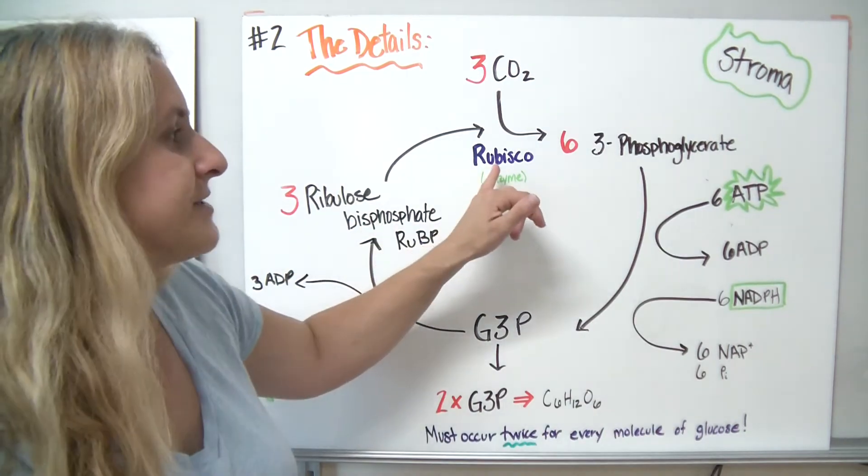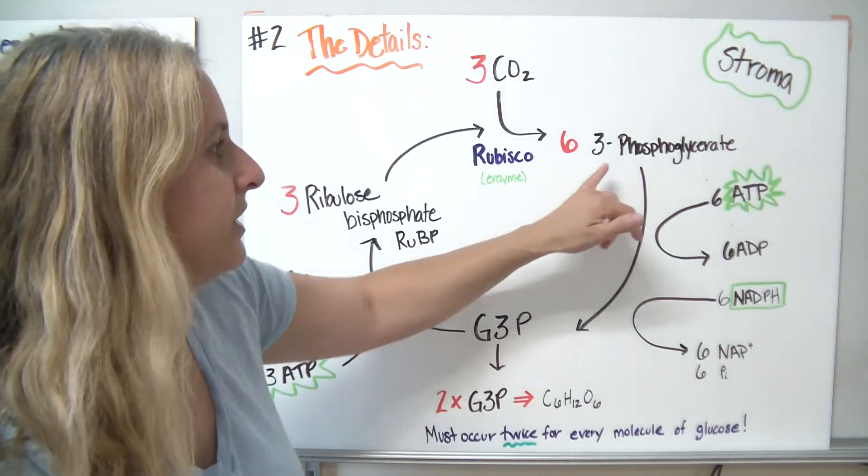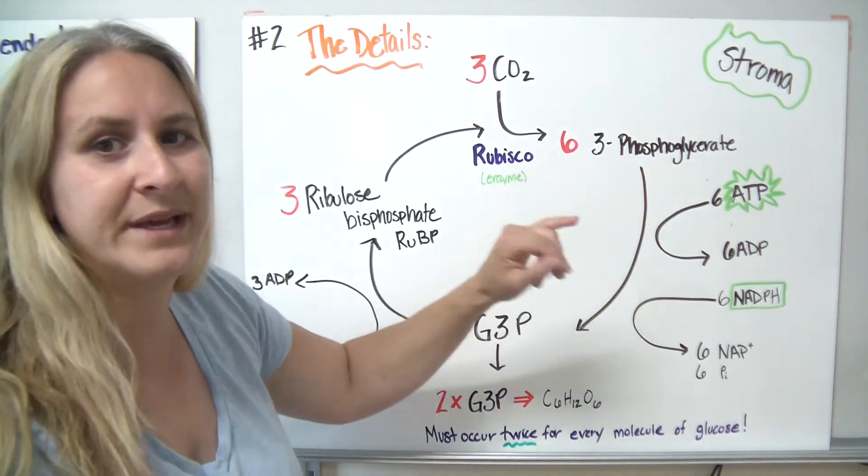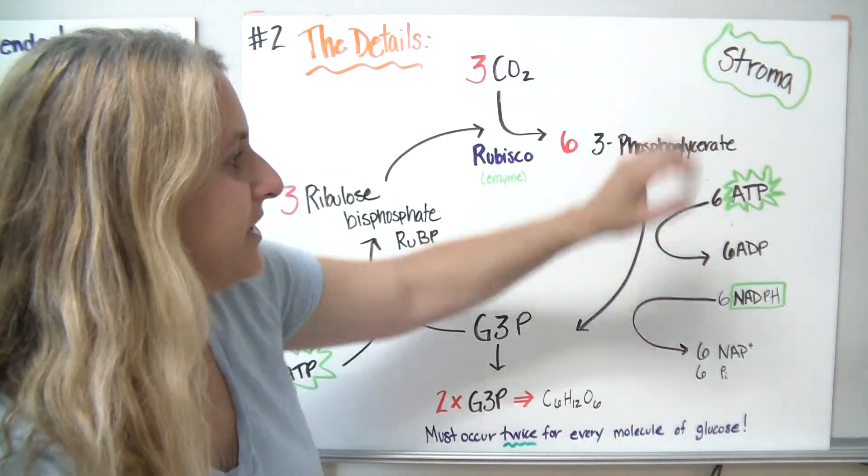As those two compounds combine in the presence of rubisco, they're going to make something called 3-phosphoglycerate. We're going to make six of them. This is happening in the stroma.